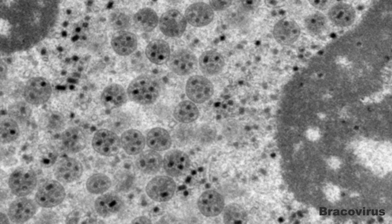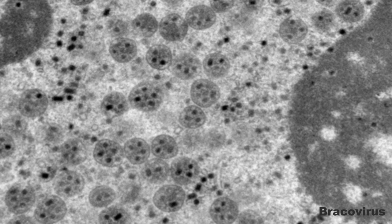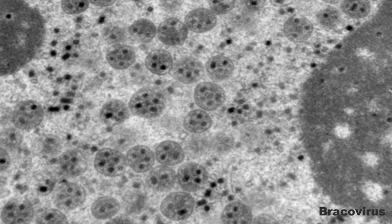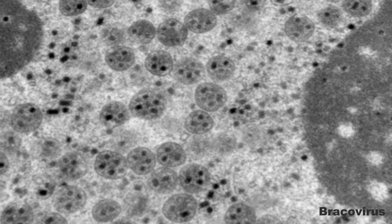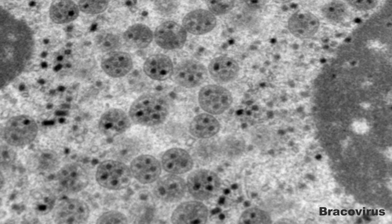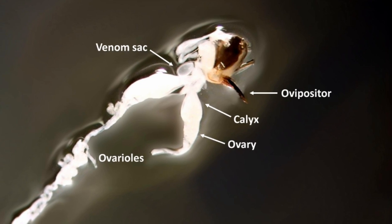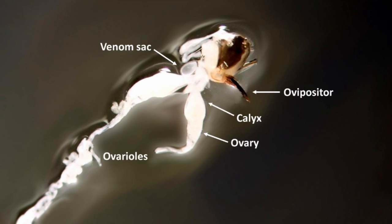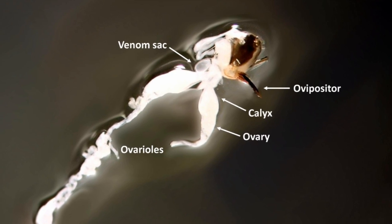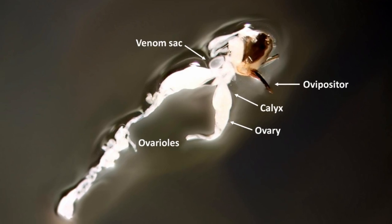Polydnaviruses in braconids, called bracoviruses, consist of multiple nucleocapsids, each about 40 nanometers in diameter and containing genes of wasp origin. These are in a protein matrix within viral envelopes. Polydnaviruses are only produced in the calyx, a part of the wasp's reproductive system. The eggs are coated as they pass through the calyx before oviposition.